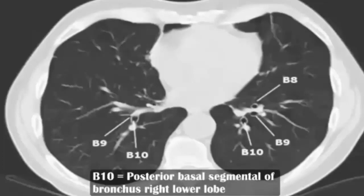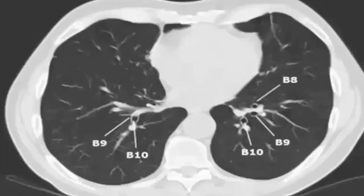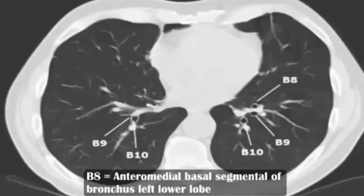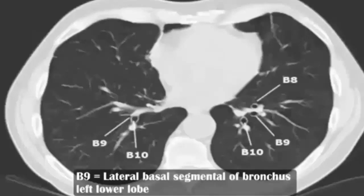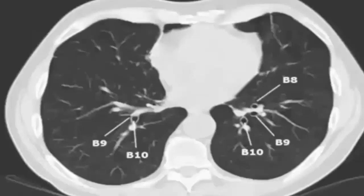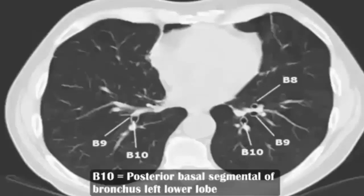B10: posterior basal segment of bronchus, right lower lobe. B8: anteromedial basal segment of bronchus, left lower lobe. B9: lateral basal segment of bronchus, left lower lobe. B10: posterior basal segment of bronchus, left lower lobe.